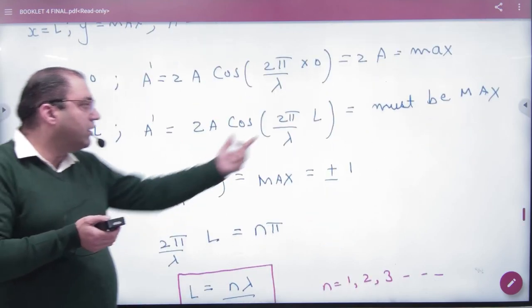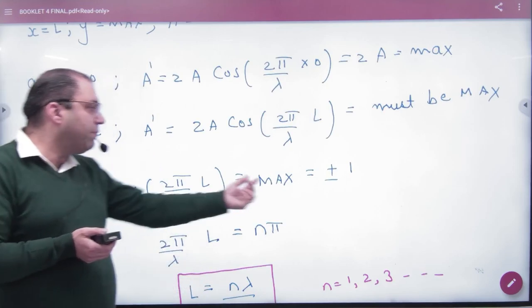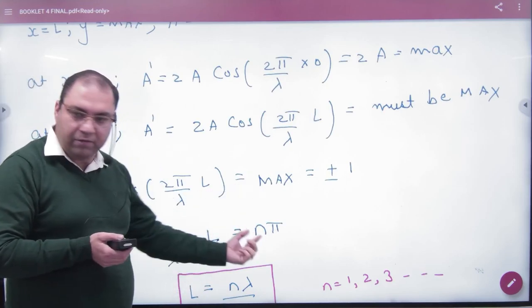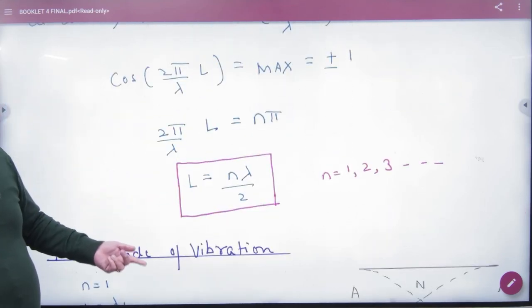This angle maximum plus minus 1. Cos theta. When theta n pi. Theta n pi, cancel.